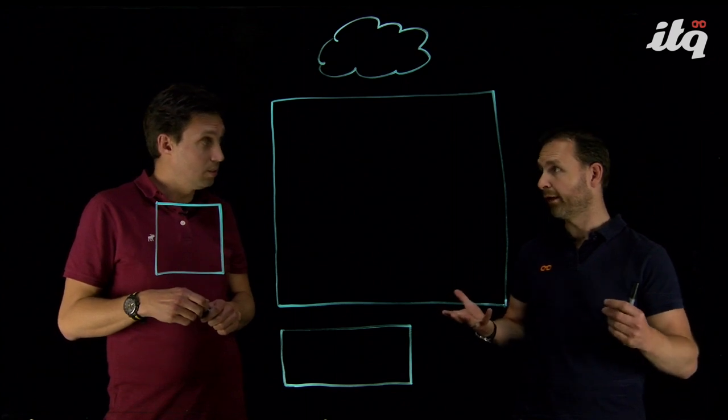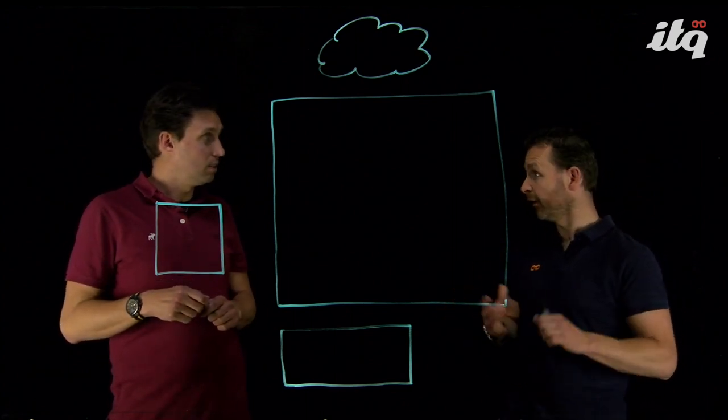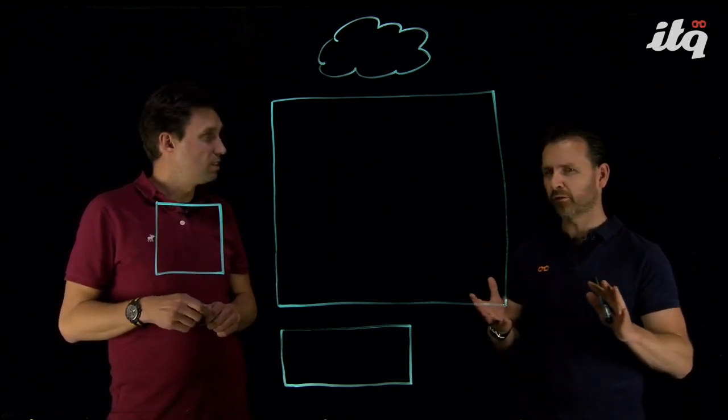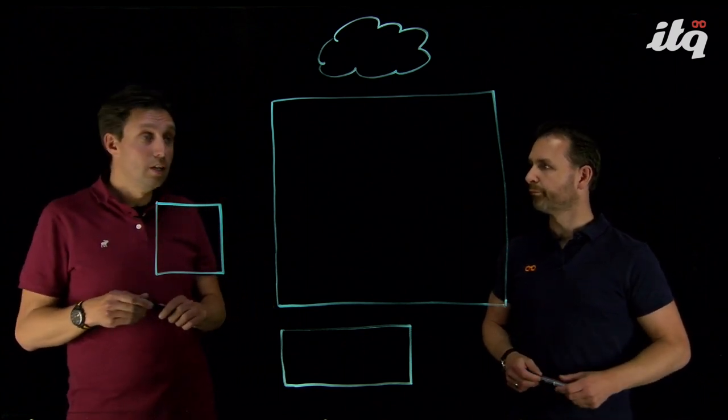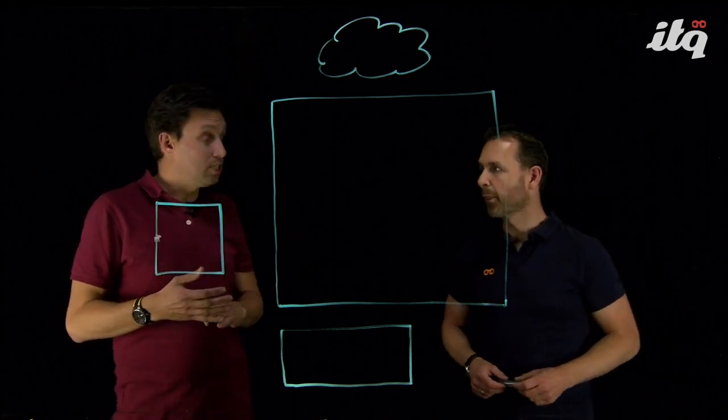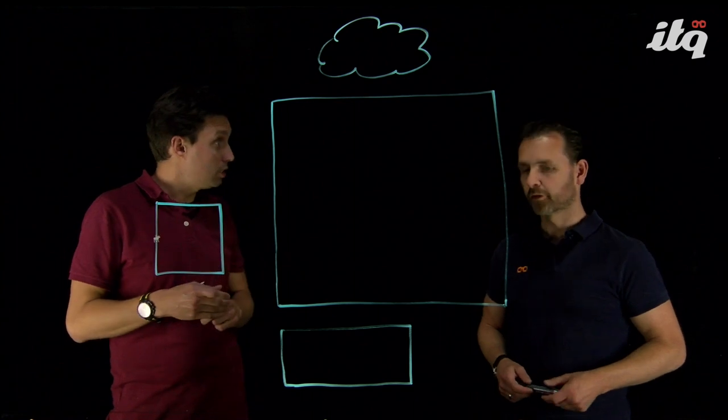That's VMware-managed cloud service running an SDDC inside an AWS data center. Exactly. So we're going to talk about networking today. There's been quite some updates there, right? Yeah, that's correct, Jeffrey. Since a couple of months, we now offer NSX-T as the software-defined network layer for VMware Cloud on AWS.